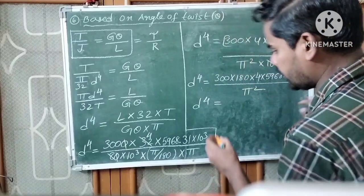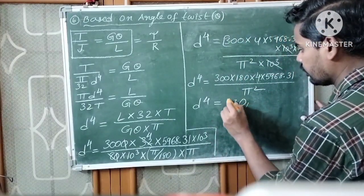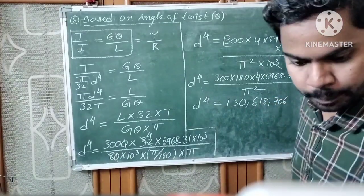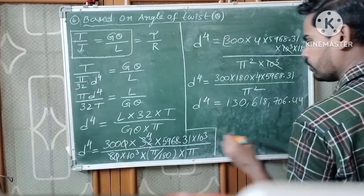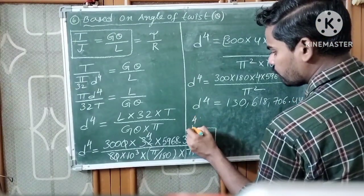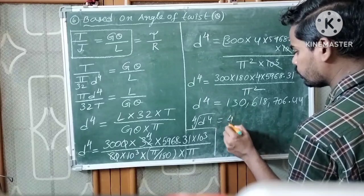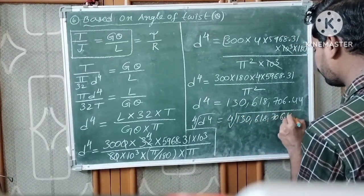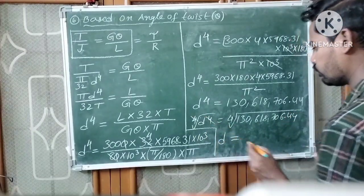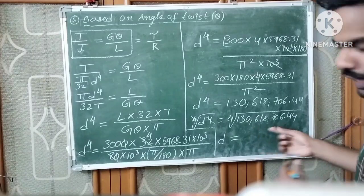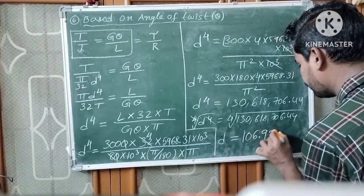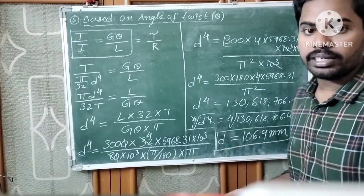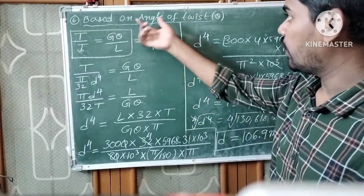Calculating, we get d to the power 4 equals 130,618,706.44. Applying the 4th root on both sides, the 4th root of d to the power 4 cancels, and d equals 4th root of 130,618,706.44, which gives d equals 106.9 mm. So the diameter of the solid shaft based on angle of twist is 106.9 mm.